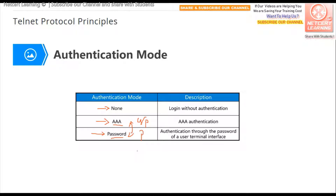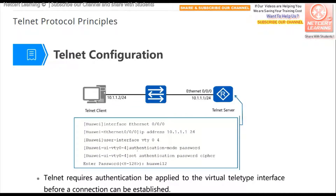This is an example of Telnet configuration on a Huawei network device in password mode. First, the client and the server must be reachable, so you need to configure IP addresses. Since they are local, they can ping each other directly. Configure the IP address on the Telnet server, which is the network device. Then this is the Telnet configuration.